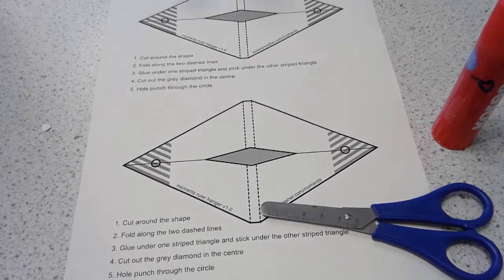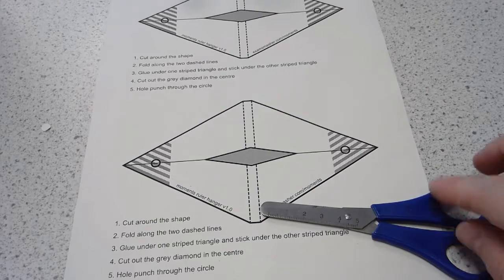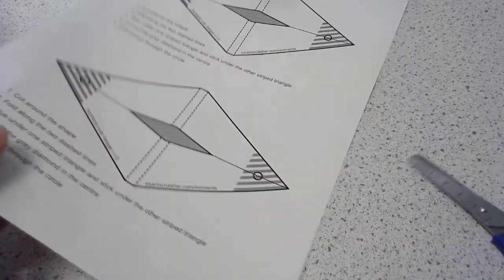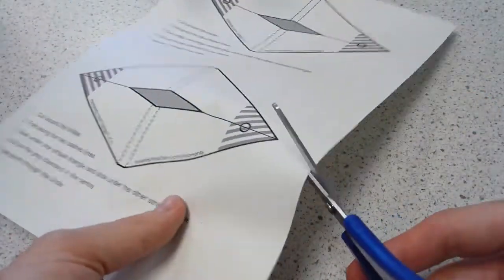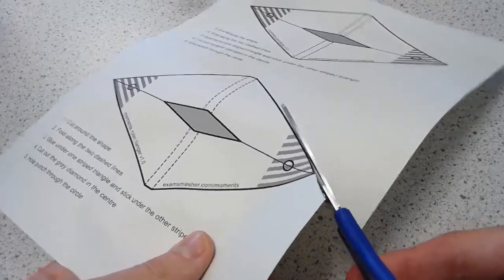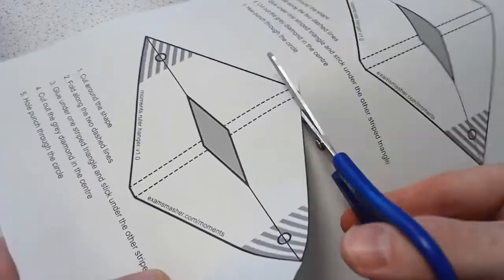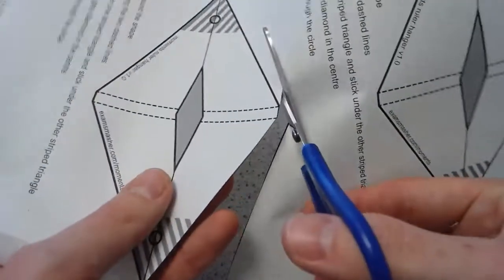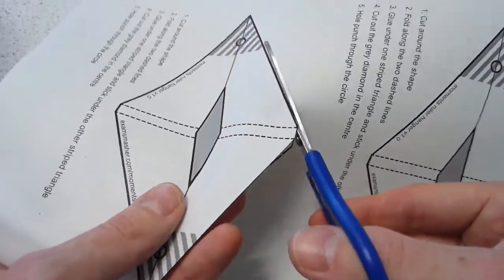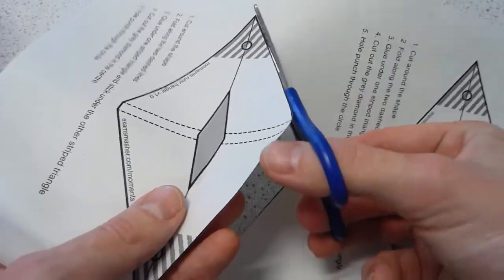That's about it. It's a pretty quick process. There's some instructions on the sheet. Basically what you need to do is cut around this shape. You don't have to be too precise about your cutting. It's not going to make a huge difference as to how it works.